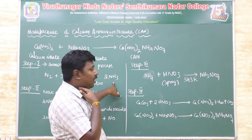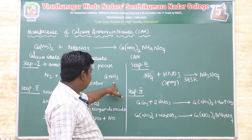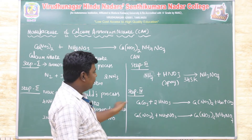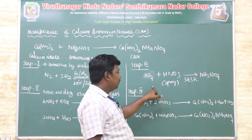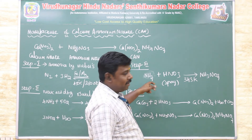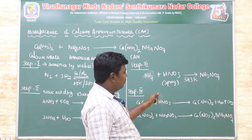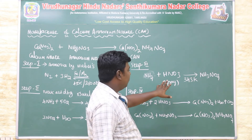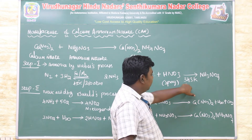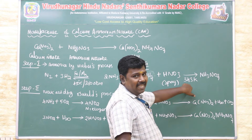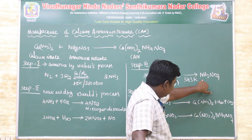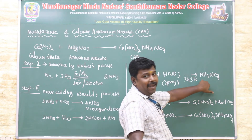Step three: ammonia is used in the first step, and nitric acid is mixed in the second step. Nitric acid is used to react with ammonia. After heating to 343 Kelvin, ammonia reacts with nitric acid to form ammonium nitrate.